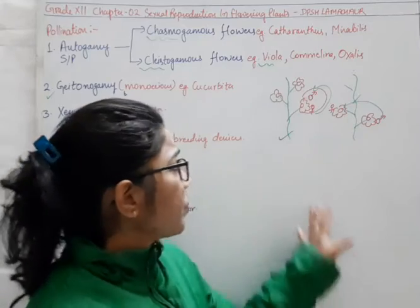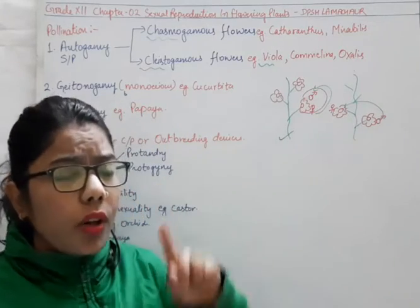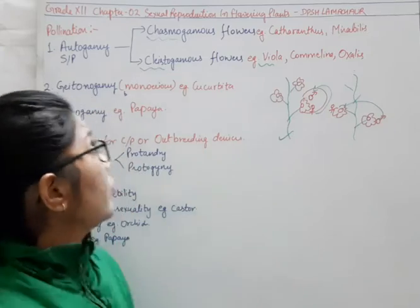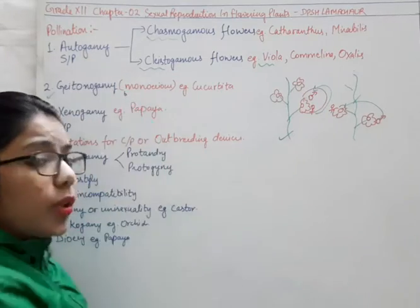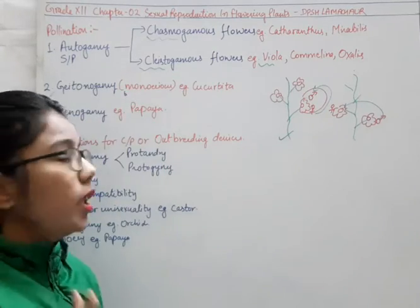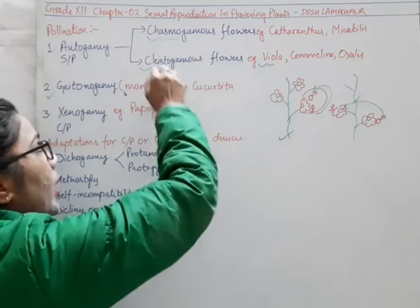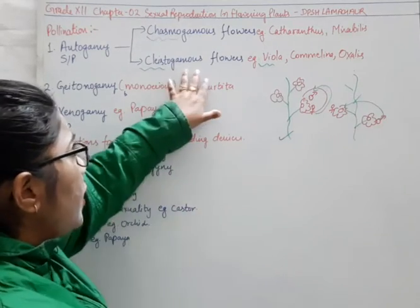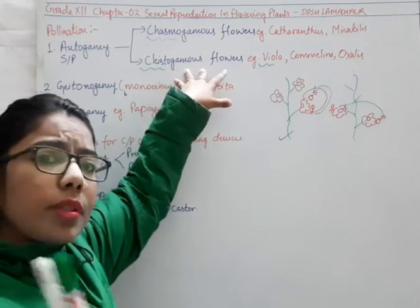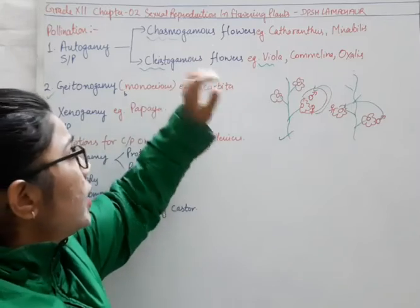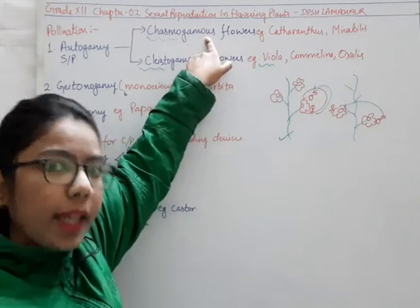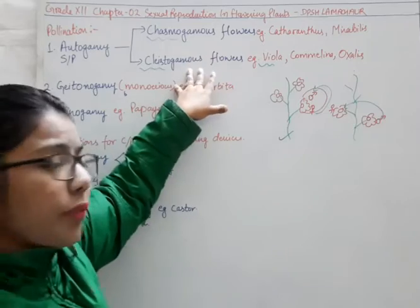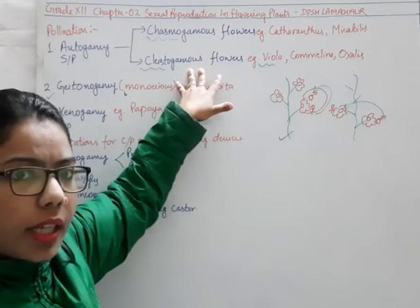So in nature, what it prefers is cross-pollination. That is why in autogamy we have two types of flower: chasmogamous and cleistogamous. If in any condition cleistogamy fails, chasmogamy can occur. But mostly it prefers cleistogamy so that there will be some cross-pollination.